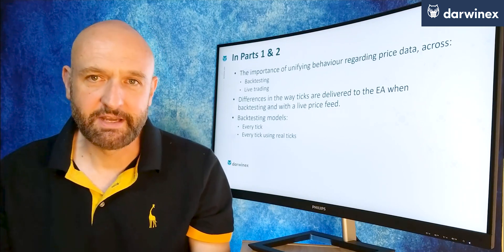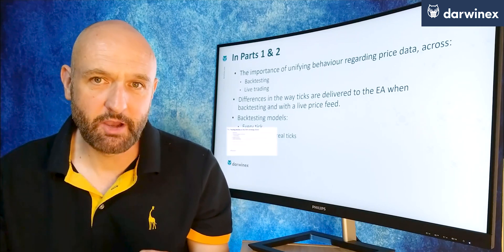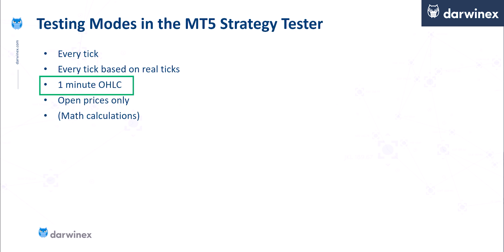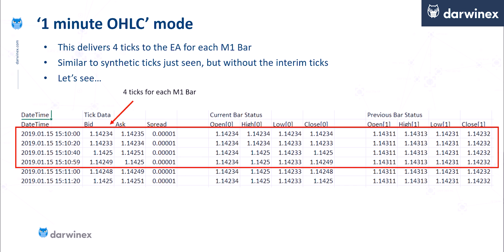We now turn our attention to the other two options available for backtesting in MT5, which are the One Minute OHLC and the Open Price models. The One Minute OHLC delivers four ticks to the EA for each one minute bar, and in many respects it's actually similar to the synthetic ticks we just saw, but without the interim ticks. The four rows highlighted in red represent the four ticks from a one minute period, and MetaTrader synthesizes these as arriving at 20-second intervals.